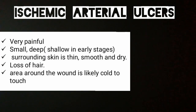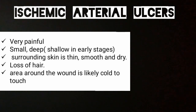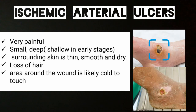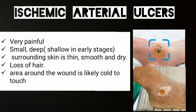Clinically, arterial ulcers are very painful and they appear small and deep but shallow in early stages. Over time the ulcer progresses deeper into the skin and can even reach the bone or muscle. The surrounding skin is thin, smooth, and dry, and loss of hair is also seen, since the skin tissue is not receiving nutrients. The area around the wound is likely cold to touch because blood supply has reduced. In these pictures you can easily see that the skin looks very dry and the ulcer is small, so they are very easy to identify.